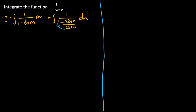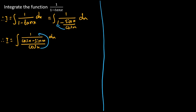So therefore, I is equal to integration of 1 divided by (cos x minus sin x) divided by cos x, dx. After multiplying through by cos x, this simplifies to integration of cos x divided by (cos x minus sin x) dx.